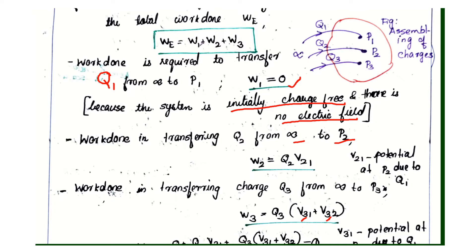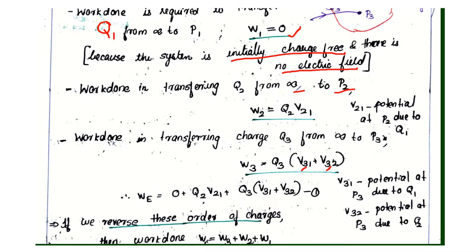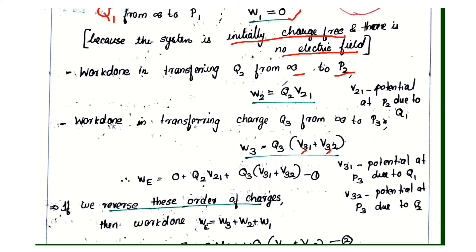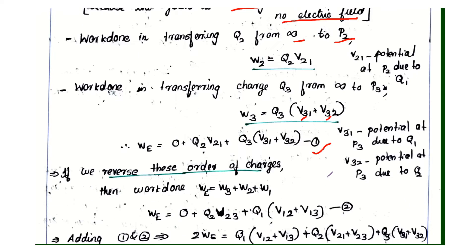WE is equal to W1 plus W2 plus W3. Summing the three work values, WE equals zero plus Q2·V21 plus Q3·(V31 plus V32). This is equation number 1.